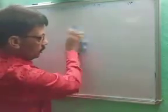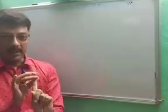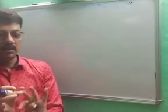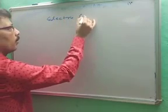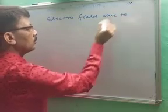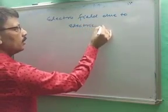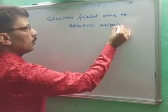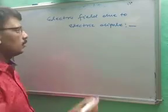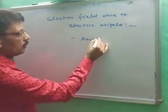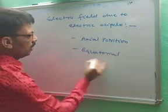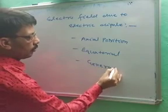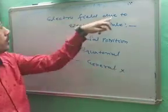Now we move on to electric field. We have already considered electric field due to a point charge and due to multiple charges. Now we will discuss electric field due to an electric dipole. We study three cases: first is the axial position, second is the equatorial position, and third is the general position — though the general case is not in the syllabus.